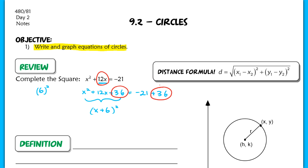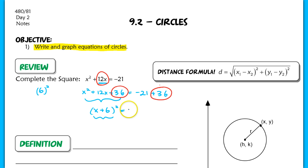Now we have a perfect square on the left-hand side. If I factor x squared plus 12x plus 36, I end up with x plus 6 squared. And on the right-hand side, I have equals 15.